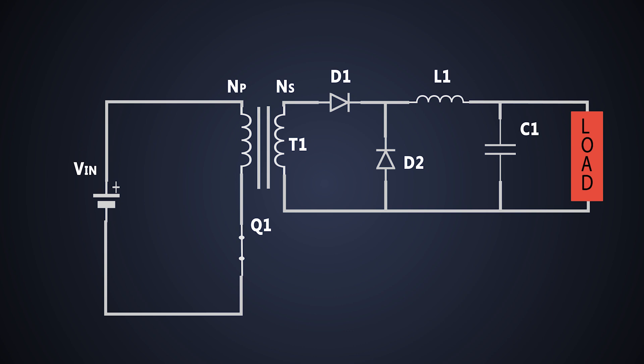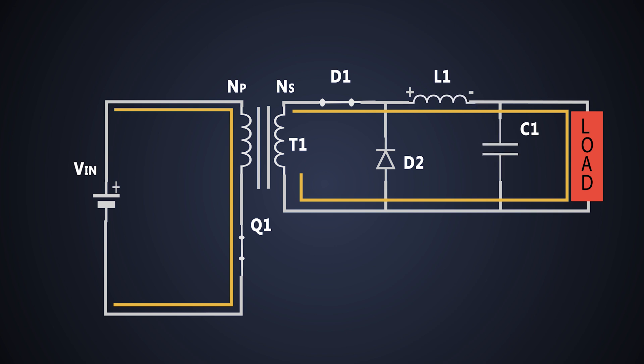When the MOSFET is turned on, the current starts flowing through this primary in this direction and due to electromagnetic induction, the voltage is induced in the secondary winding. So the current flows in this direction. So the diode D1 gets forward biased. The current flows through this LC filter and it provides power to the load.